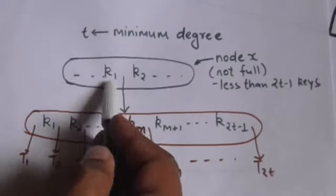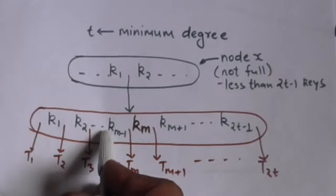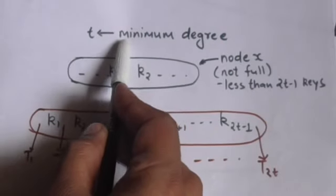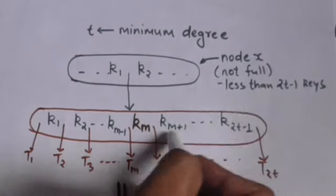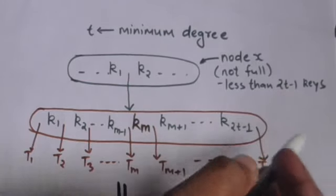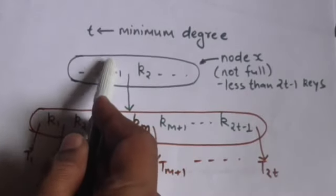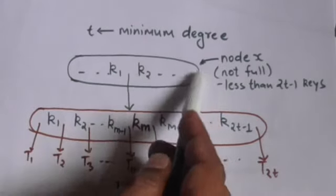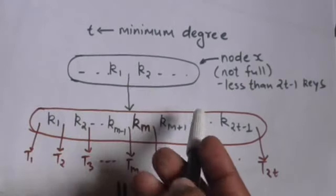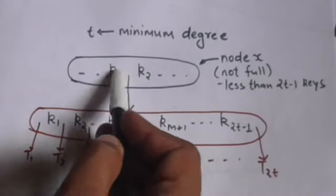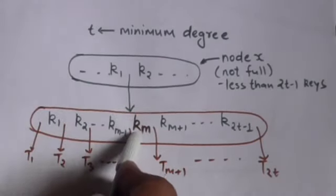Between keys k1 and k2 of node X there is a full child node of node X. Now we have to split this full node. Since the minimum degree is T, this full child contains 2t minus 1 keys. The parent node X is non-full, so it contains less than 2t minus 1 keys and can accommodate one more key.